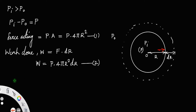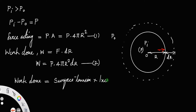We also know work done is equal to surface energy times increase in area. The value of surface tension is numerically equal to surface energy, so instead of surface energy you can write surface tension. Also, since there are two surfaces — one inside and one outside — you have to put a factor of two because of the two surfaces.